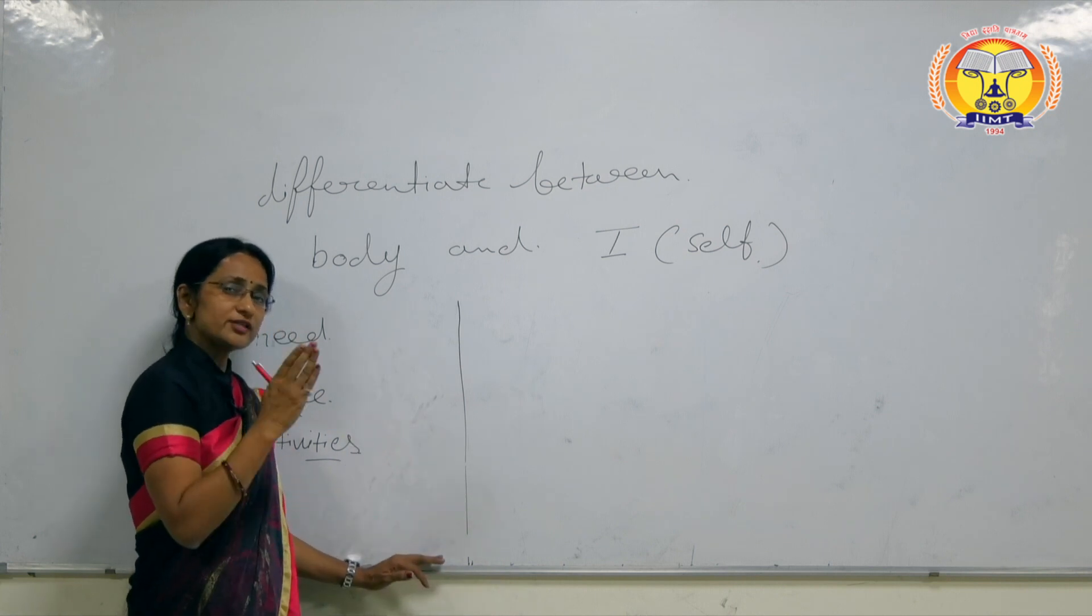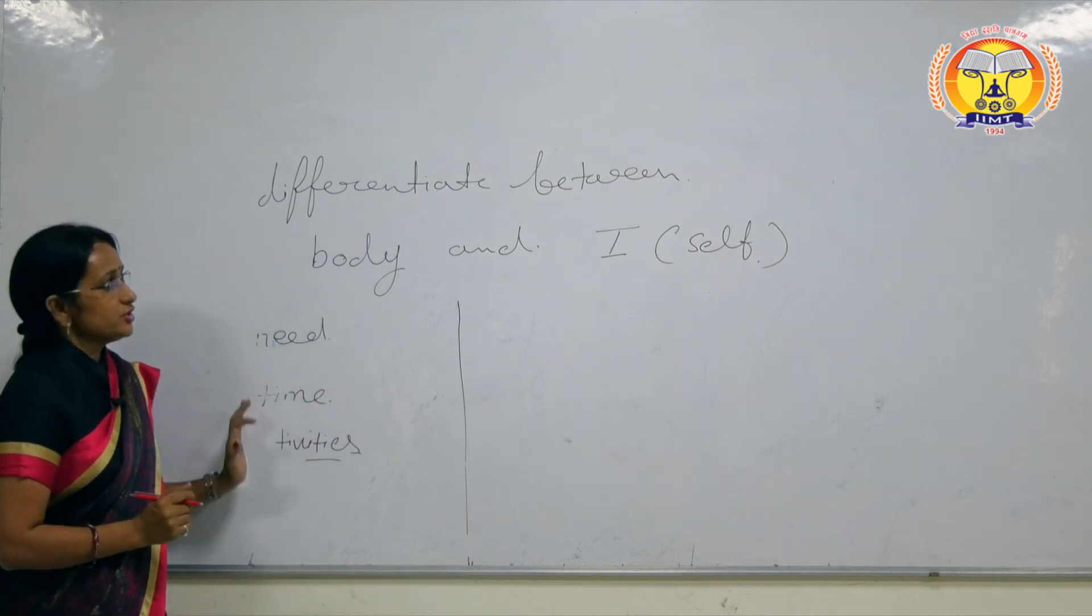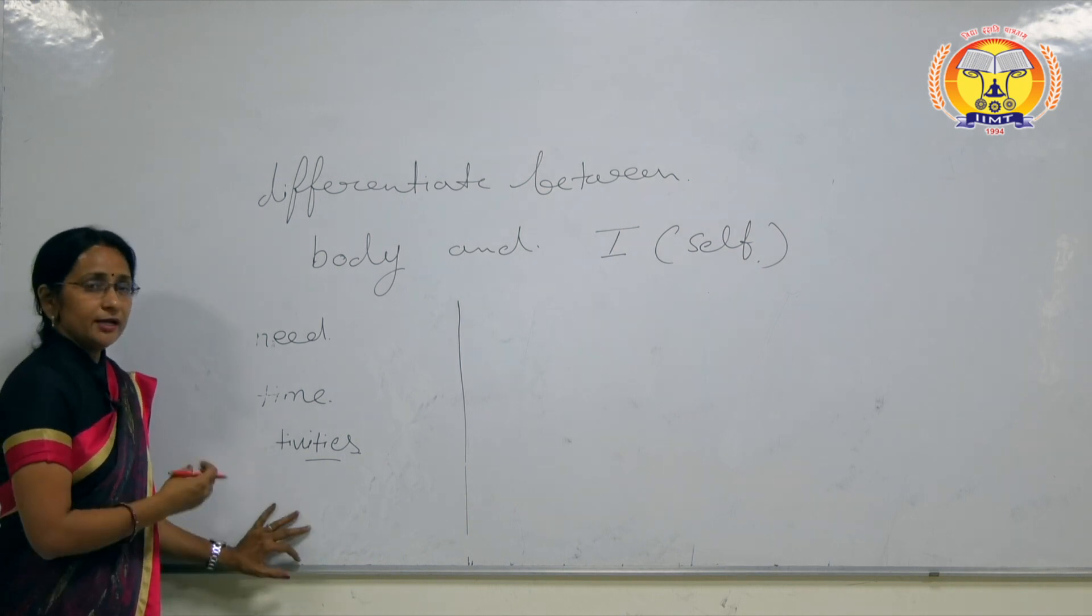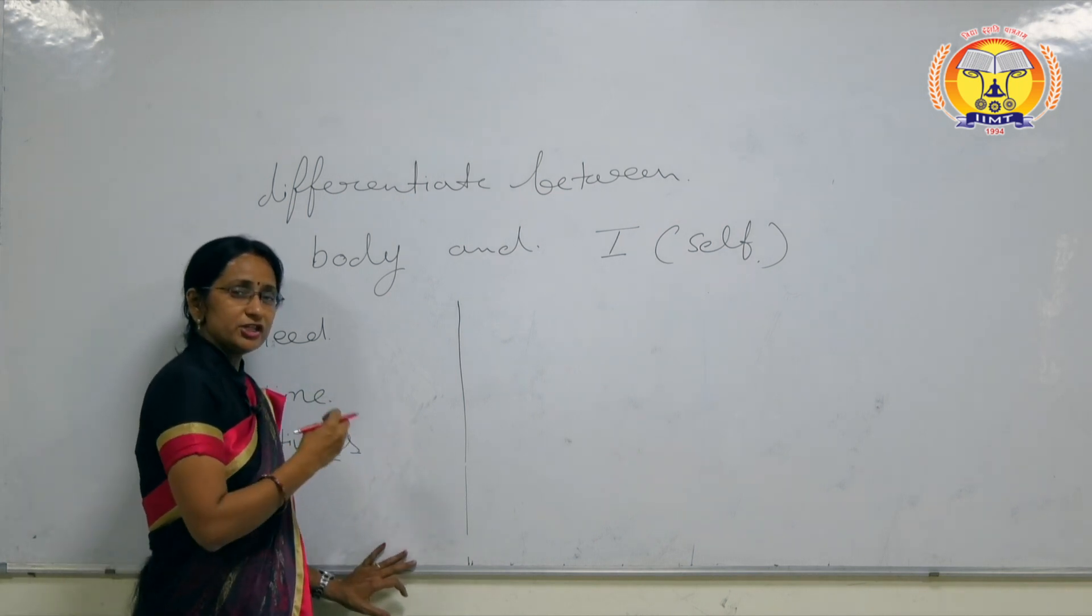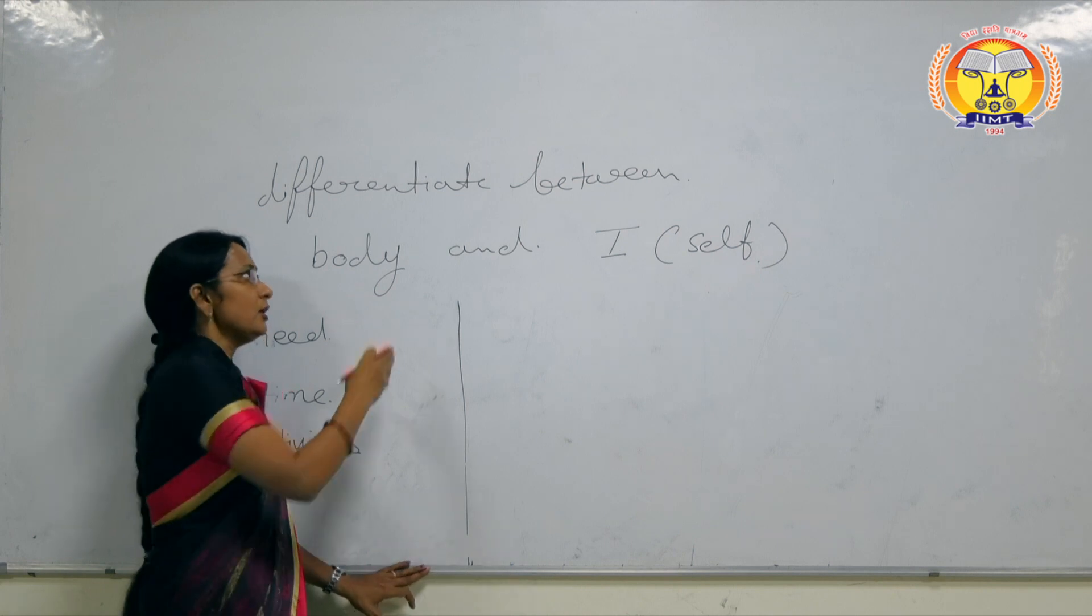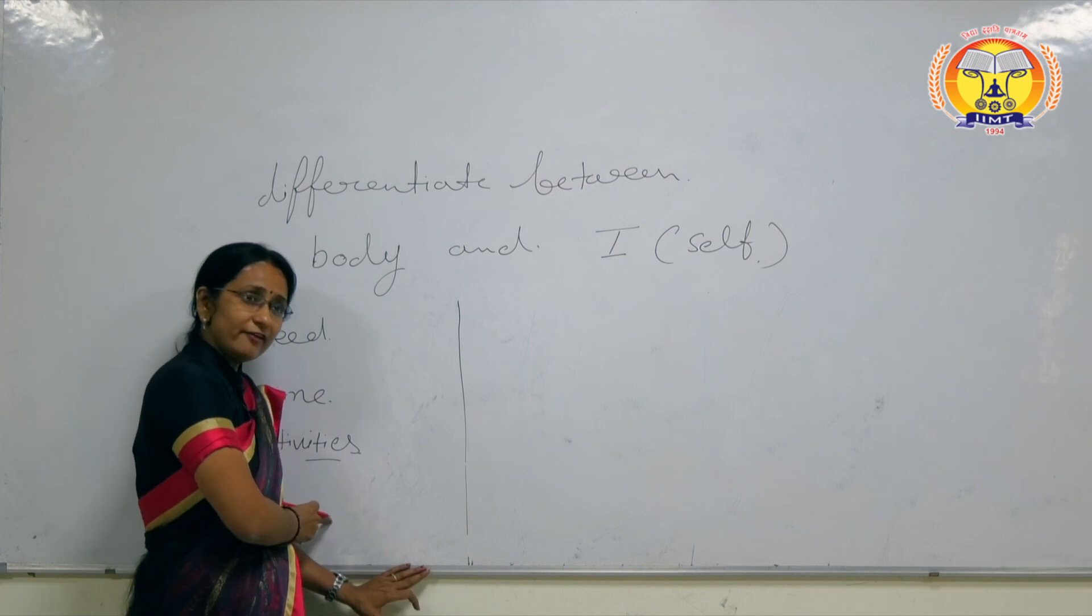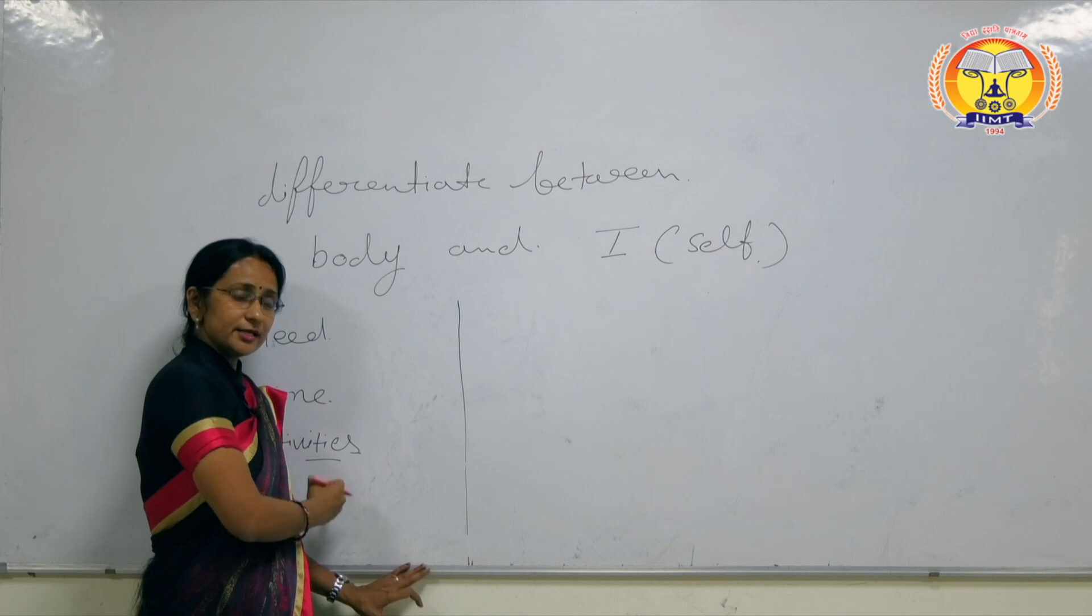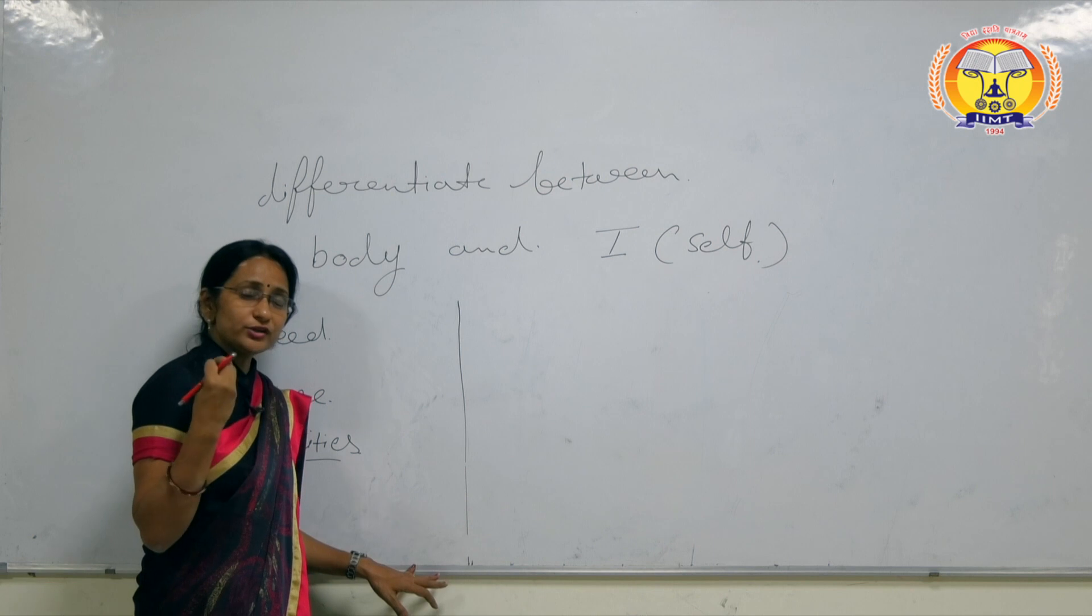We can say what is the differentiate between body and self on the basis of time, needs, and activities, and type. Body is material, physio-chemical, which means physical facilities on the basis of type. Self on the basis of type is conscious entity.